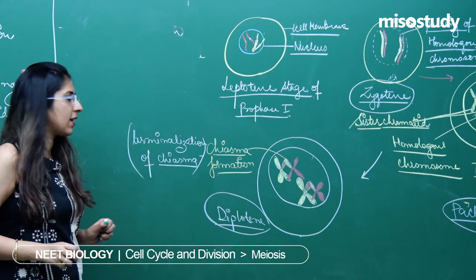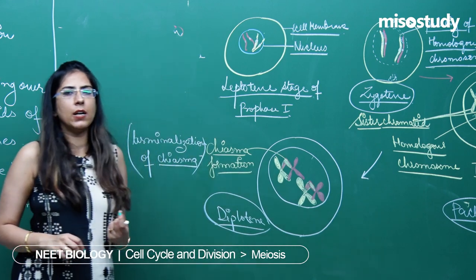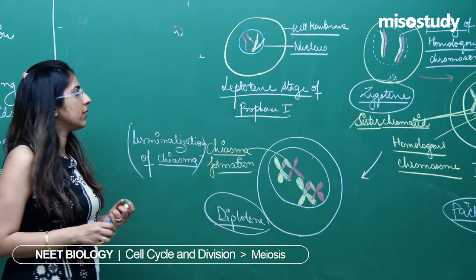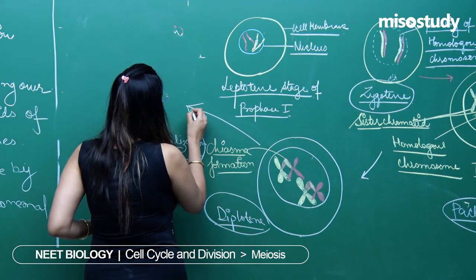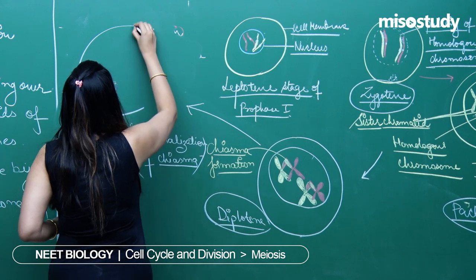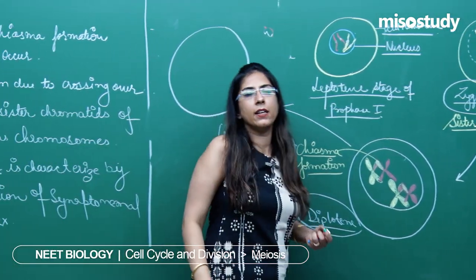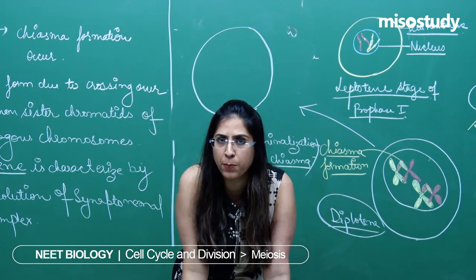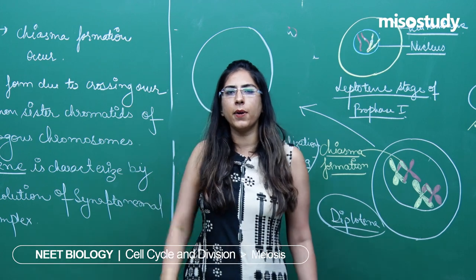The next phase is the fifth phase, called the diakinesis stage. The diakinesis stage is approximately the same as that of late prophase. In the diakinesis stage, the nucleus disappears. Similarly, the nucleolus also disappears and the chromosomes are ready to arrange themselves at the metaphase plate, because after this the next stage is metaphase.